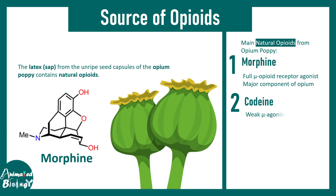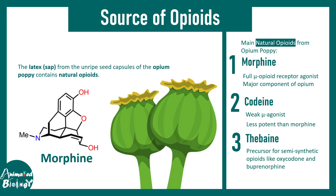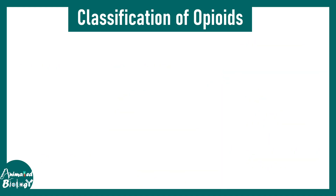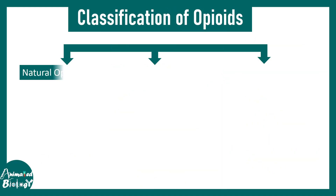Codeine is another naturally found opioid which is a weak mu receptor agonist and is less potent than morphine. There is also thebaine, which is a precursor for many semi-synthetic opioids like oxycodone and buprenorphine. This brings us to the classification of opioids.